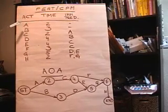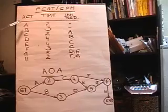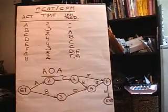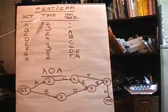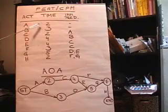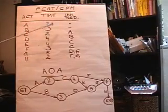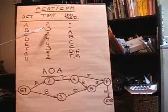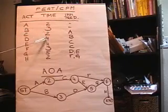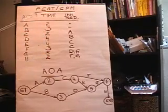Let's assume that we've got a project that has these eight activities, and we'll label them A through H. And let's assume that we know the times for the activities. Activity A takes two days, Activity B takes three days, and so on: two, four, four, three, five, and two, respectively.